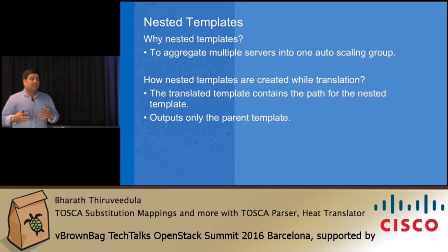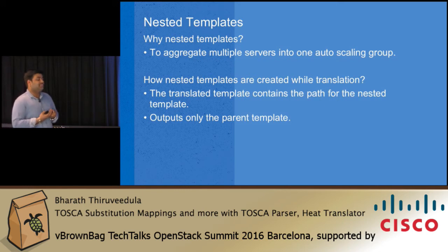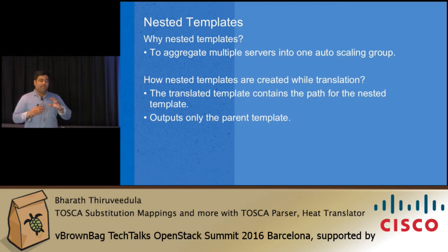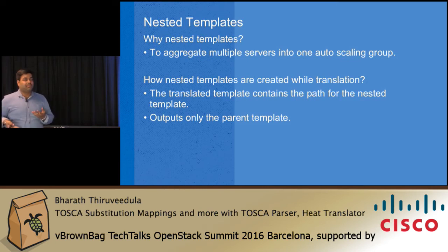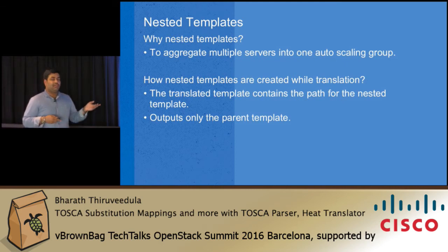When implementing autoscaling support in Heat Translator we use nested templates. In Heat, when you define an autoscaling group, you must either define one Heat server resource or refer to a template that has multiple servers — there is no way to define two servers in one autoscaling group directly. So we opted for nested template support.